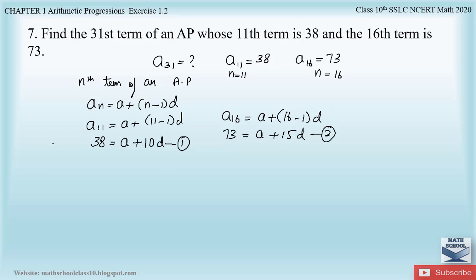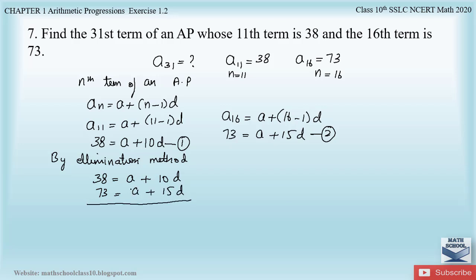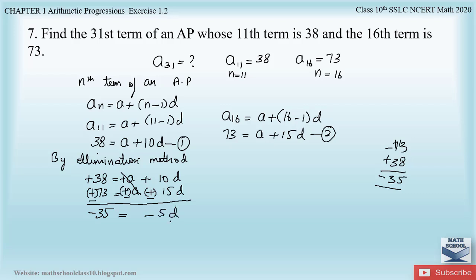Using equations 1 and 2 we find a and d by the elimination method. Equation 1: 38 = a + 10d. Equation 2: 73 = a + 15d. The coefficient of a is 1 in both equations, so we subtract equation 1 from equation 2. 73 - 38 = 15d - 10d, giving 35 = 5d, so d = 35/5 = 7.